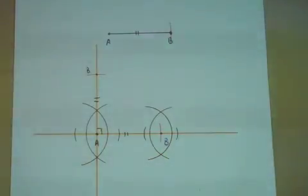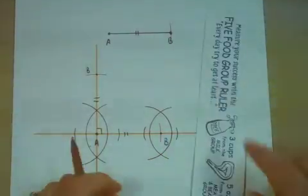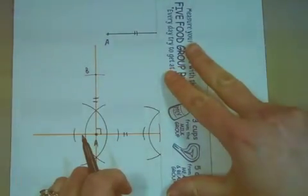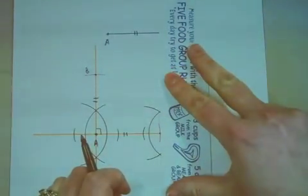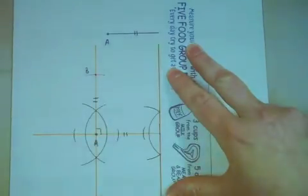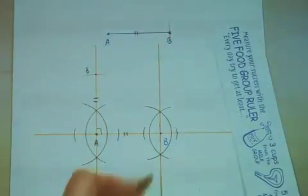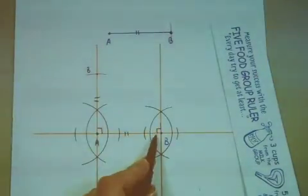Now I'm going to take my straight edge and my writing tool, and I'm going to line up those wonderful intersection points. I'm going to draw again a very nice straight segment. This creates a right angle.